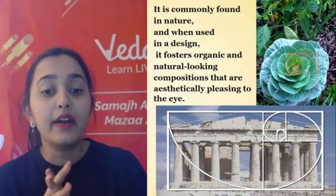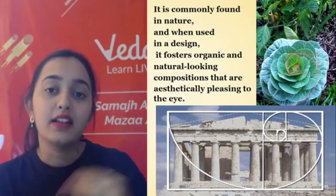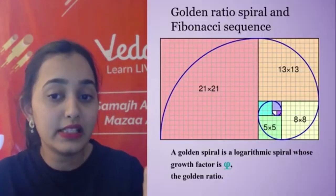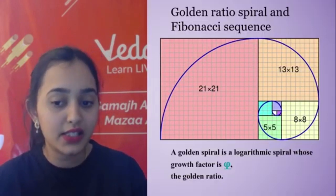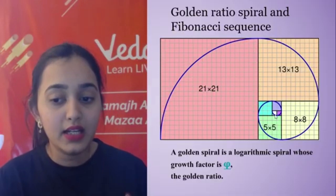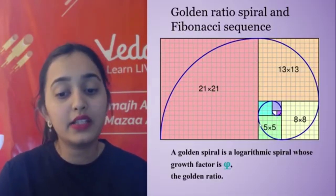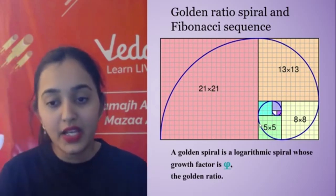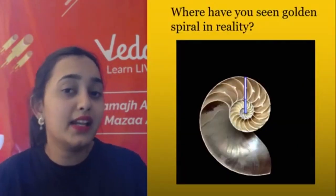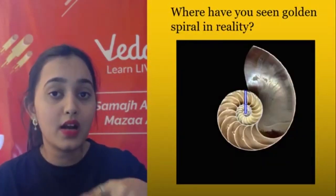The Golden Ratio makes something look naturally organic and aesthetically pleasing to our eye. This Golden Ratio also forms the Golden Spiral using the Fibonacci sequence. The Golden Rectangle we form using the Fibonacci sequence creates a spiral, which we call the Golden Spiral. The Golden Spiral is essentially Phi in spiral form.